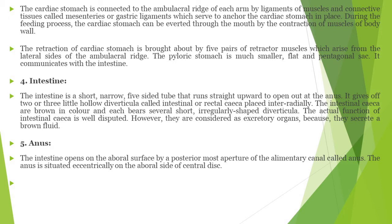The intestine is a short, narrow, five-sided tube that runs straight upward to open out at the anus. The intestine connects the oral and aboral surfaces and opens the anus to the outside. It gives off two or three little hollow diverticula called intestinal or rectal seca, placed interradially. The intestinal seca are brown in color, and each bears several short, irregular-shaped diverticula.